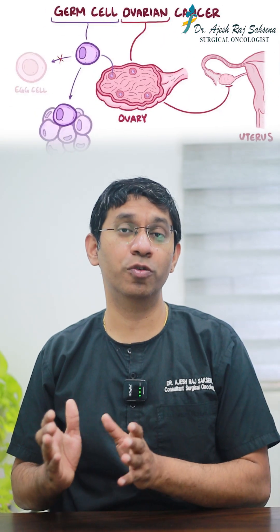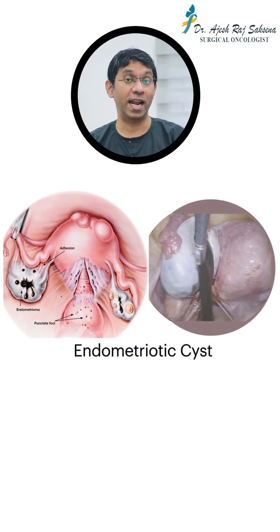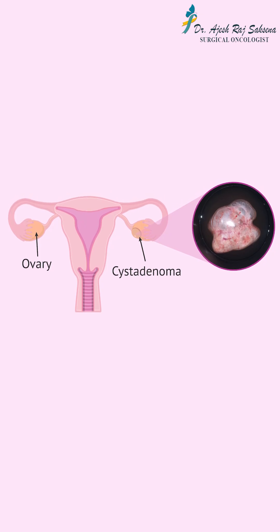In this age group, we also see germ cell tumors, dermoid cysts, and yolk sac tumors, which are particular to this age group. Women in the reproductive age group can have endometriotic cysts or endometriomas, and cystadenomas, which can be purely benign.